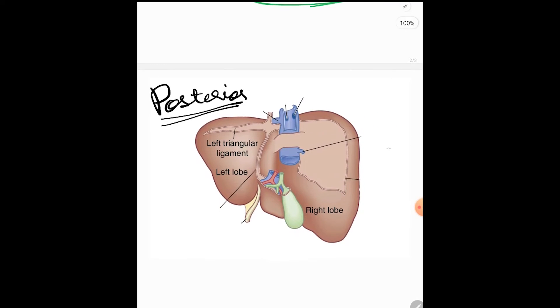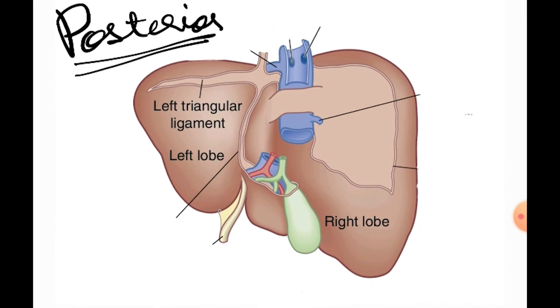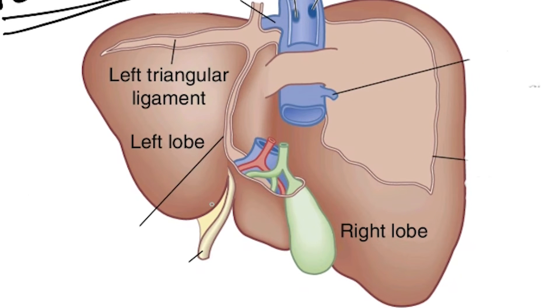In the posterior surface of the liver also, there are a lot of structures but here also ligamentum teres can be asked and that is also very important. If you look at the liver inferior border, you can see a notch over here. This is actually called the umbilical fissure.